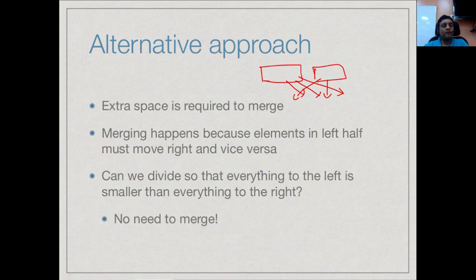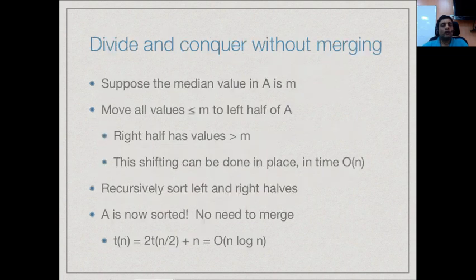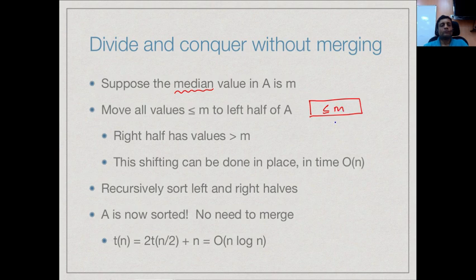So can we divide everything so that this doesn't happen — everything on the left is smaller and everything on the right is larger? Is it possible to do a divide and conquer in this fashion? If so, we need to put the middle value in the center. If we can find the median — the value such that exactly half the values in the array are bigger and half are smaller — we move everything smaller than m to the left half and everything strictly greater on the right side.